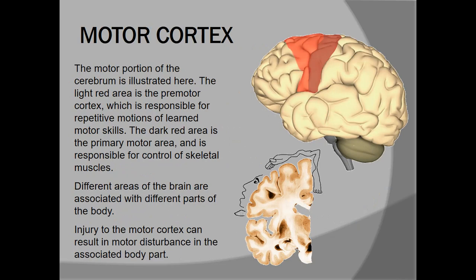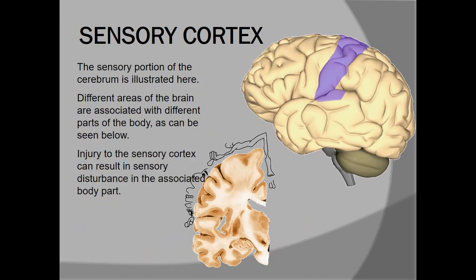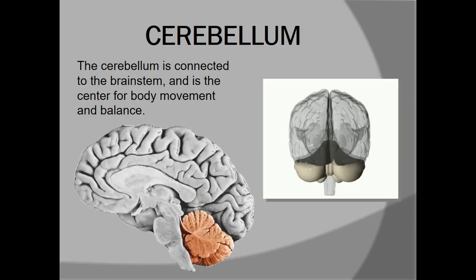The motor cortex is part of the frontal lobe, and motor components of the whole body are controlled here. Different parts are distributed in the motor cortex as shown in this picture — it is called the homunculus representation of the different parts of the body on the motor cortex. The sensory cortex also has different parts of the body represented on it, similar to the motor strip with minor changes. The cerebellum is connected to the brainstem and is the center for body movement and balance.